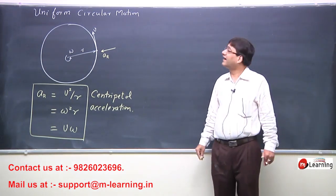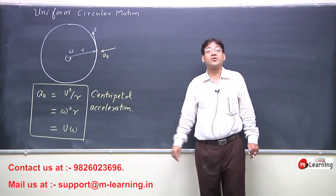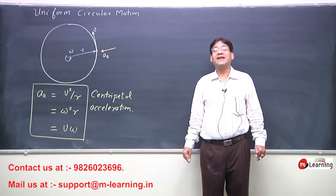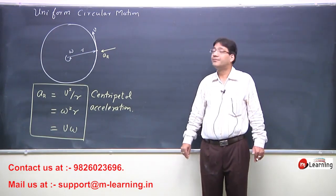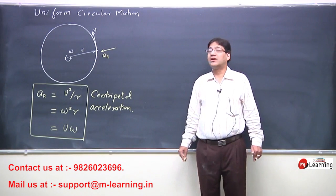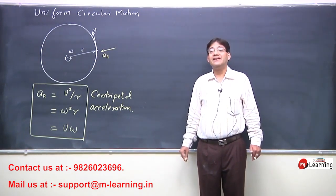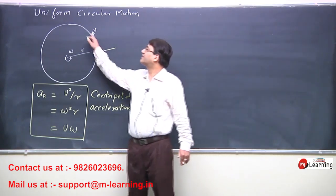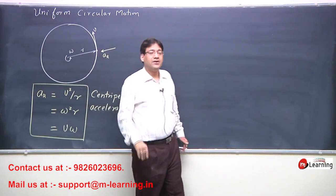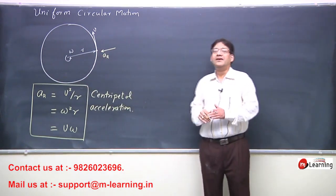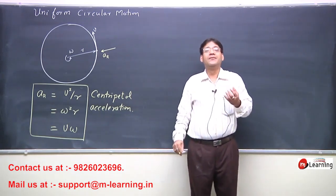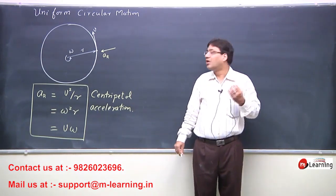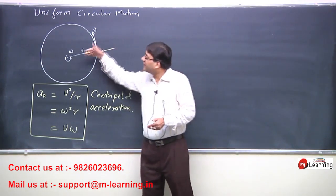Uniform circular motion means a particle is moving on a circular path with constant angular velocity omega, or equivalently, with constant linear speed v. This describes the situation where over a long time there is uniform circular motion and the particle is moving in a radially inward direction.